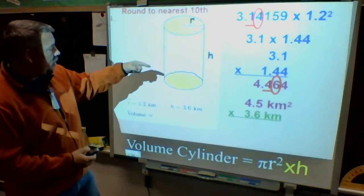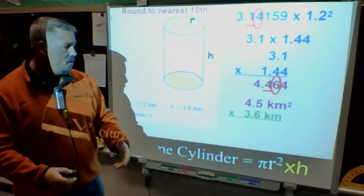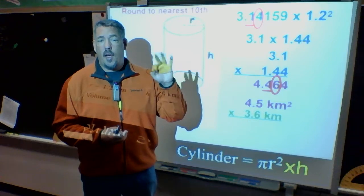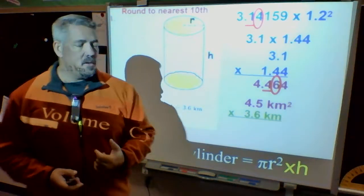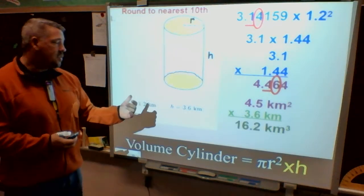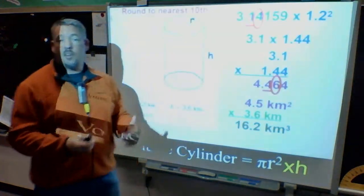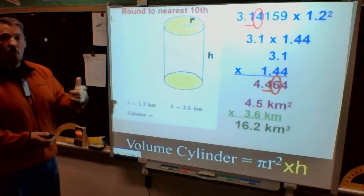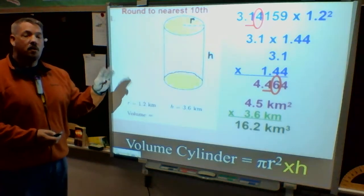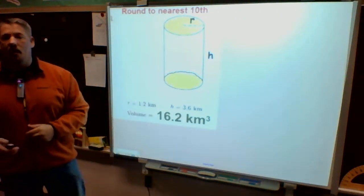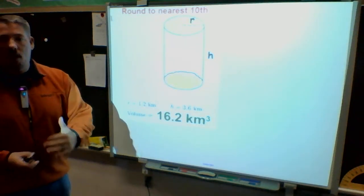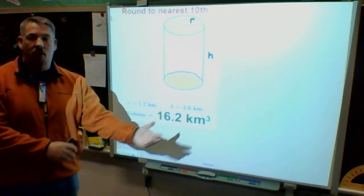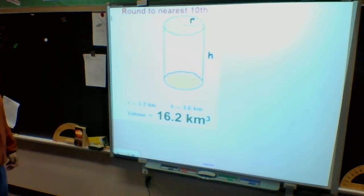I write that down, then look at my height of 3.6 kilometers. Notice I have kilometers squared and kilometers — multiplying labels where there are two and one other makes three, which is why volume is always cubed. When I take 4.5 and multiply by 3.6, I get 16.2, or 16 and 2 tenths cubic kilometers. Make sure you put your answer on the right line, because if you do that on the I-STEP test you get the answer correct.